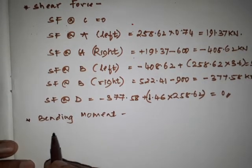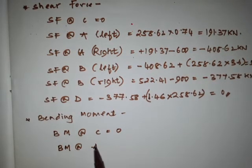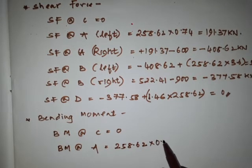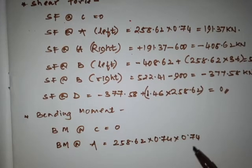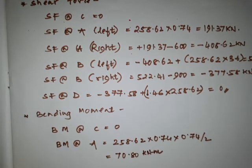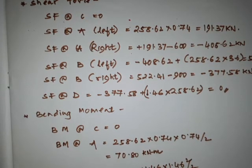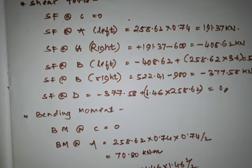Bending moment at C is equal to 0. Bending moment at A equals 258.62 into 0.74 into 0.74 divided by 2, giving 70.80 kilonewton meter. Then bending moment at B: 258.62 into 1.46 squared divided by 2, giving 275.63 kilonewton meter.